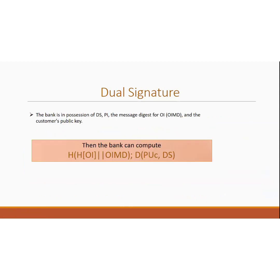The next is the bank side. Here also the bank computes a verification quantity. The bank uses the public key of the customer for decryption — PK_C is the public key of customer obtained from the certificate provided by the certificate authority. OIMD is the order information message digest. H(PI) is the hash of the payment information, and these are concatenated before taking the hash of the resultant data. The total three formulas are: one for the customer — the construction of dual signature — second for the merchant side, and third for the bank side.